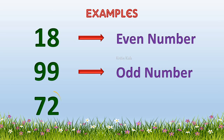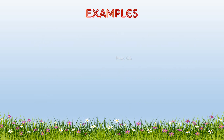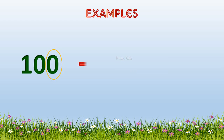72 is an even number. Let's see this number: 100. The unit place here has 0, so 100 is an even number.